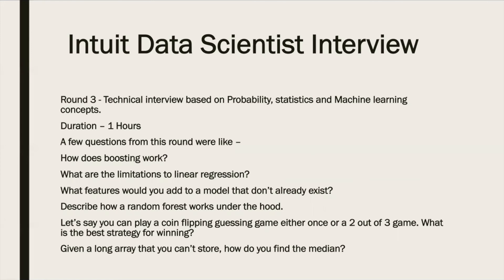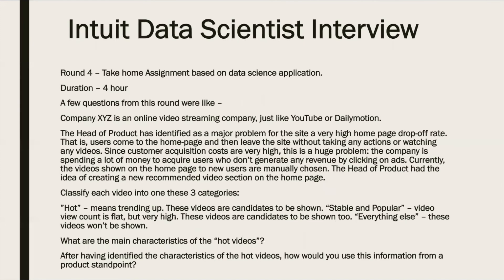After clearing the technical round, there was another interview round where most questions were on probability, statistics, and machine learning. The questions were fairly foundational. Some examples included: how does boosting work, the working of random forests, a few limitations of linear regression, and in probability: in a coin flipping game where you can play single or two out of three games, what is the best strategy for winning? This round was designed to check the candidate's depth of understanding.